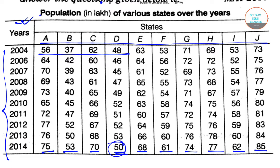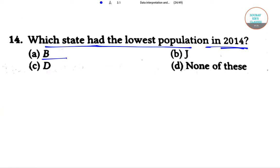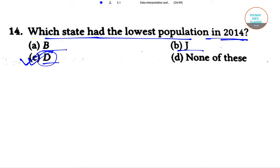So 50 is the lowest, and that corresponds to state D — state D is the answer. Looking at the options, we have B, J, D, and none of these. Clearly option C will be our answer, which says state D has the lowest population in 2014. Now let's move to the next question based on that table.